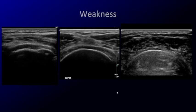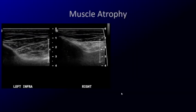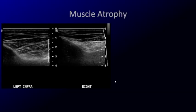A lot of referrers will ask: did you look at the muscles? Are they atrophied? That can impact management, because if the muscle is completely fatty replaced, those patients have a different outcome. Sometimes if I'm not sure there's a tear, I will start looking at the muscles first — because if the muscle looks abnormal, then something is going on in the tendon.